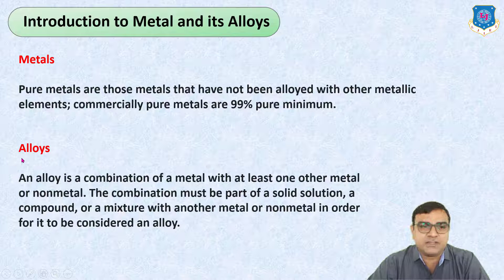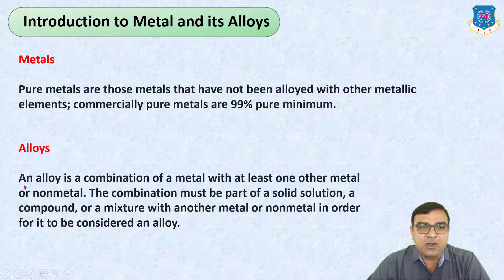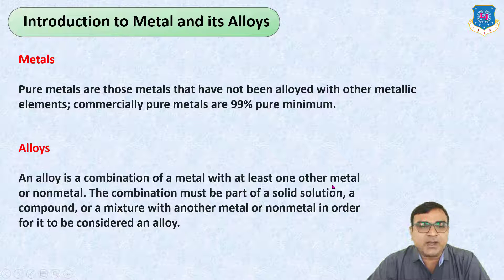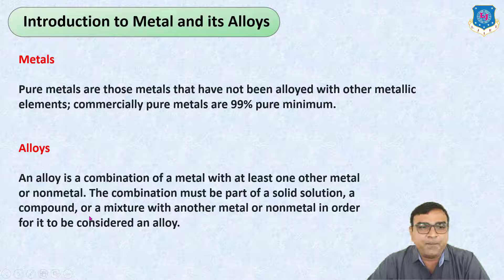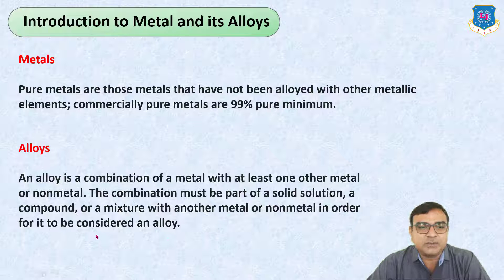But what is an alloy? An alloy is a combination of metal with at least one other metal or non-metal. The combination must be part of a solid solution, a compound, or a mixture with another metal or non-metal in order to be considered an alloy.